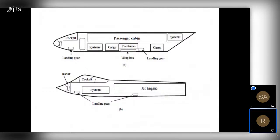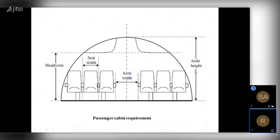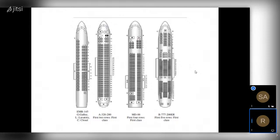Here we have two different types of fuselage — one for a jet aircraft and one for a passenger aircraft. See the different types of fuselage. The complete different compartments and complete shape of the passenger aircraft fuselage and the jet engine aircraft fuselage are completely different. We also see the distance and cabin requirements.